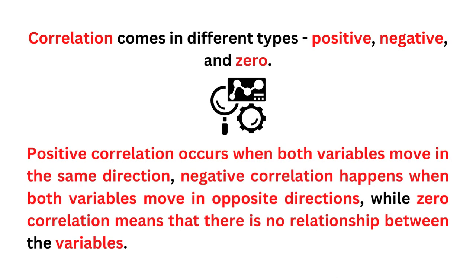Correlation comes in different types: positive, negative, and zero. Positive correlation occurs when both variables move in the same direction, negative correlation happens when both variables move in opposite directions, while zero correlation means that there is no relationship between the variables.